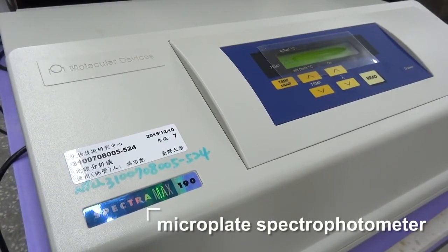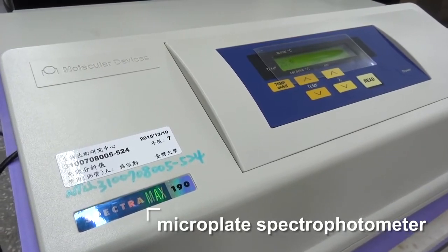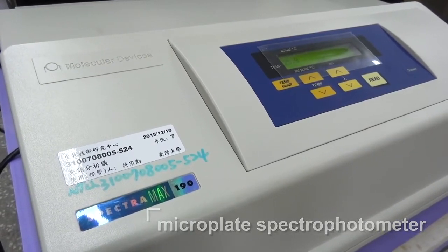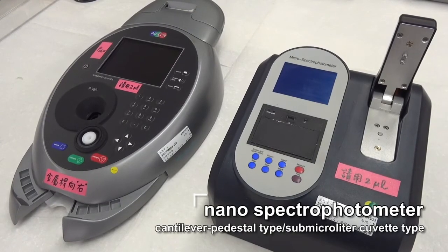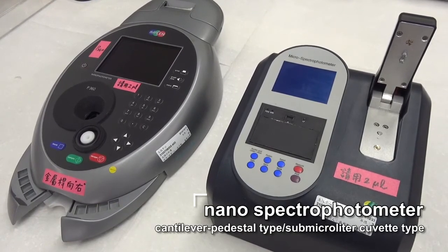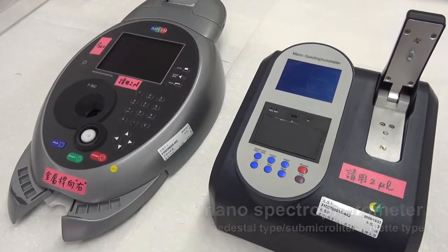Moreover, the recent years have witnessed the development of the microplate spectrophotometer that can measure multiple samples simultaneously and the cantilever pedestal type or submicroliter cuvette type nanospectrophotometer that can measure sample volume as little as submicroliter.